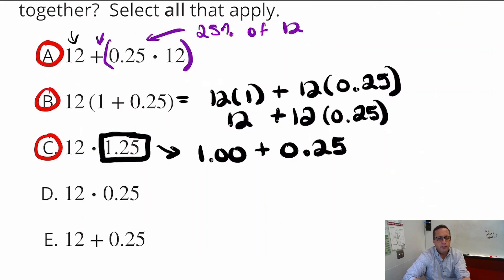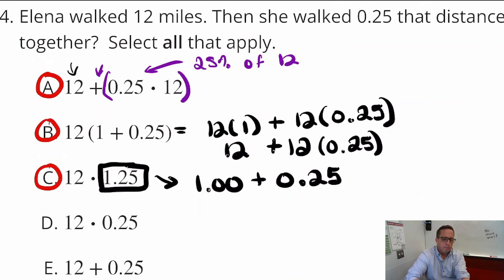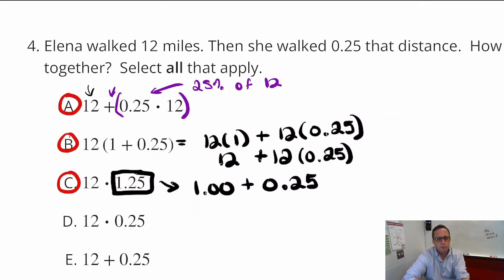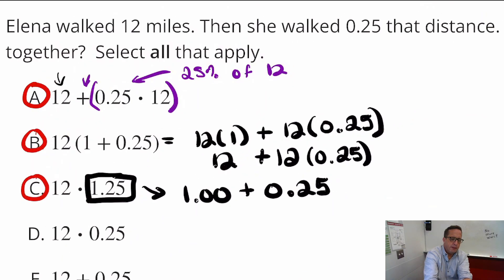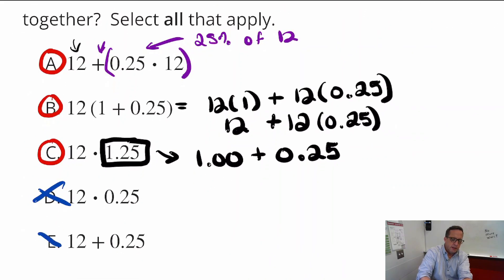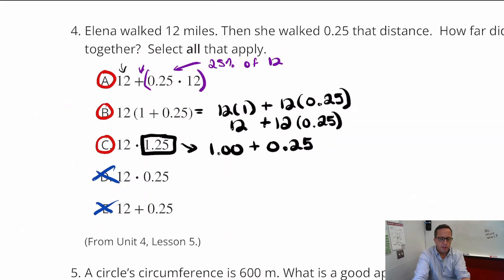D is going to result in fewer miles. That's going to represent fewer miles. So, it cannot be D. And E, that's the wrong arithmetic there altogether.